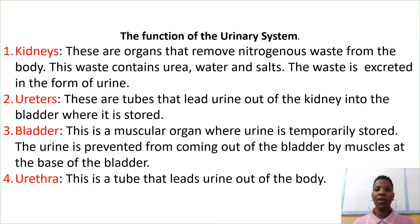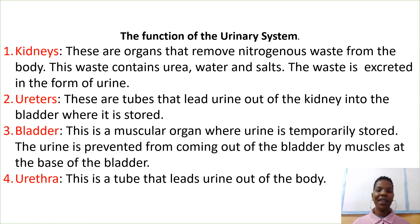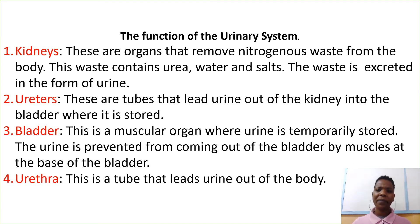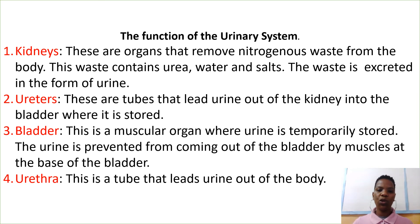Now I want us to look at the functions of the urinary system. We'll start with the kidneys. These are the organs that remove nitrogenous waste from the body. This waste contains urea, water and salt. The waste is excreted in the form of urine. Let's move on to the ureters. These are the tubes that lead urine out of the kidney into the bladder where it is stored. The bladder is a muscular organ where urine is temporarily stored. The urine is prevented from coming out of the bladder by muscles at the base of the bladder. The urethra is a tube that leads urine out of the body.